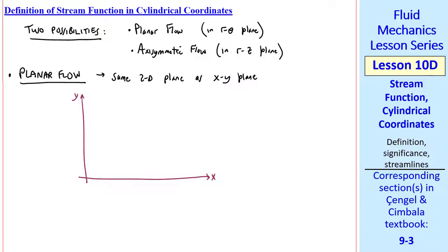Planar flow is in the same 2D plane as the X-Y plane that we talked about in a previous lesson. Here are our X-Y axes. We define R as the radius from the origin, and theta as the angle from the X-axis. Instead of U and V, we use velocity components U_R and U_theta, defined at some point R, theta under consideration.